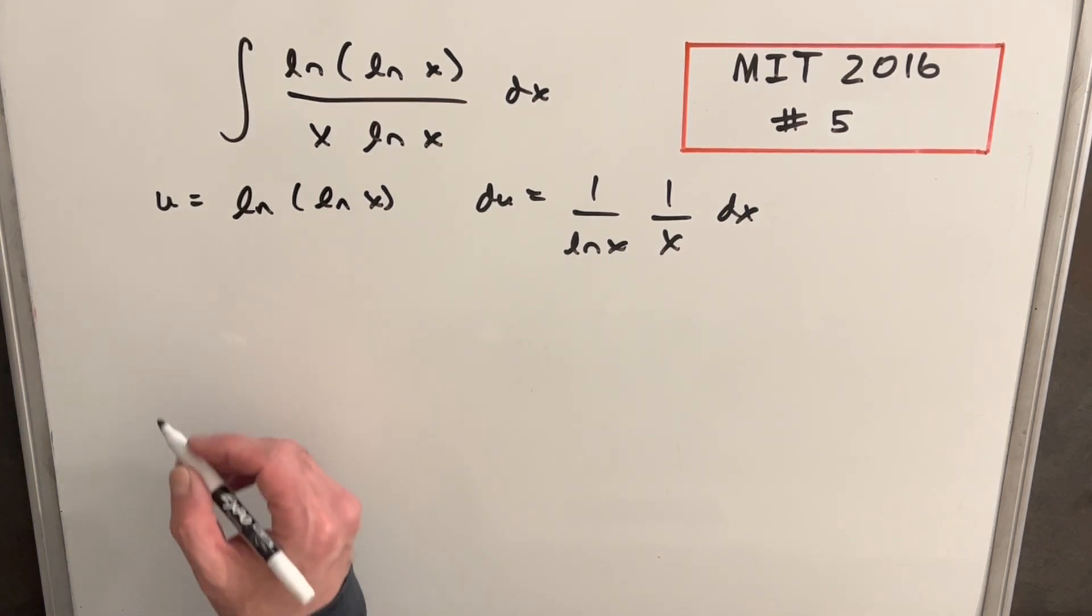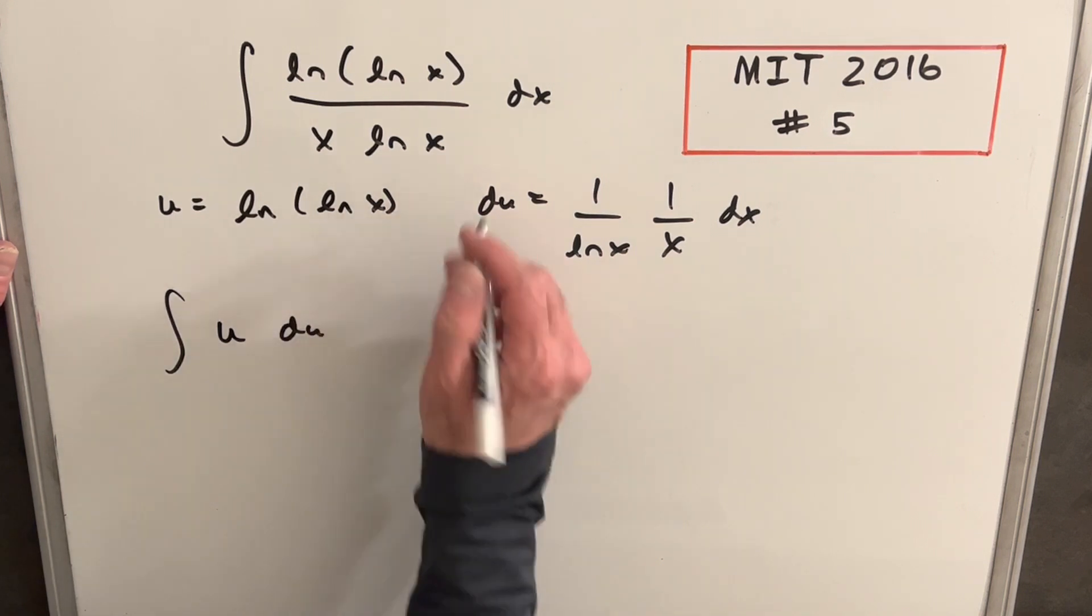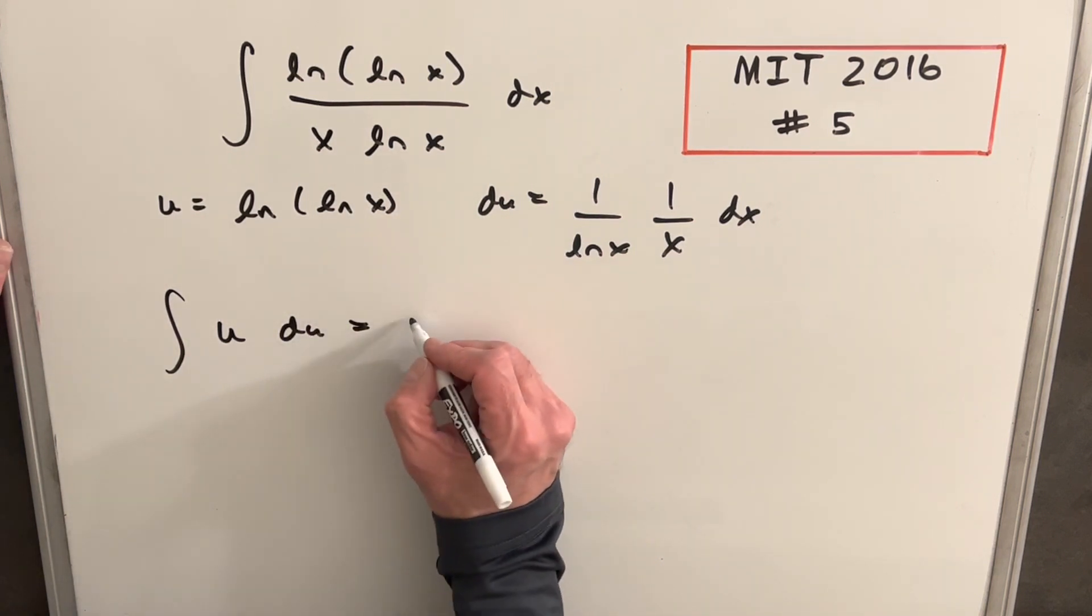I think MIT really helped us out on this one. So making this substitution, we just have the integral of u, and then everything else is our du.